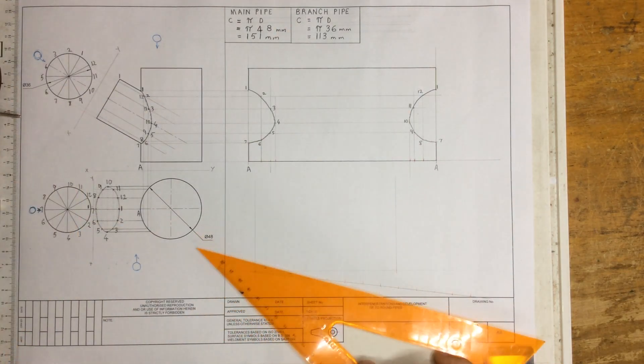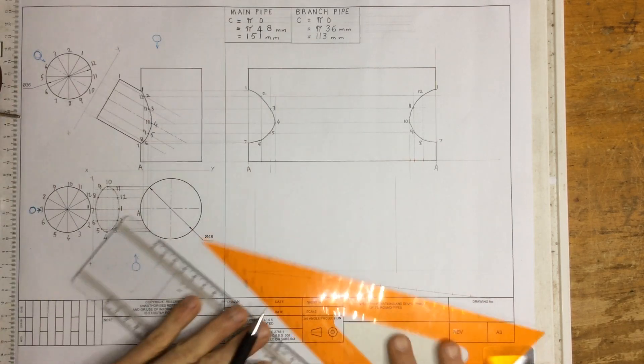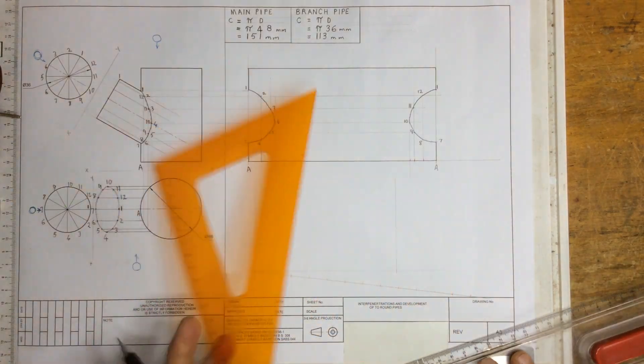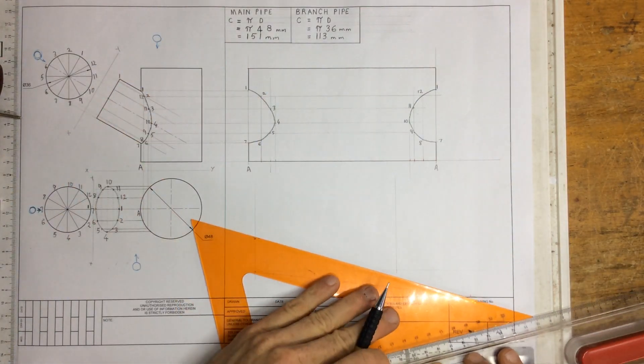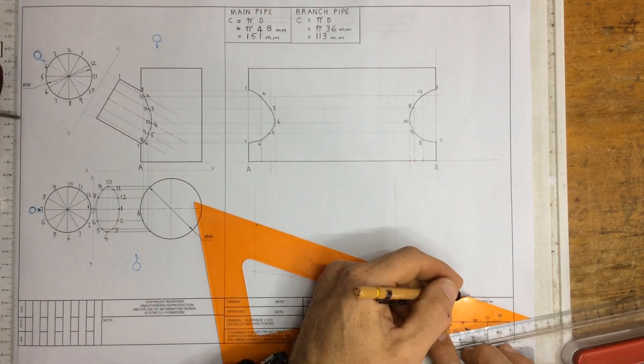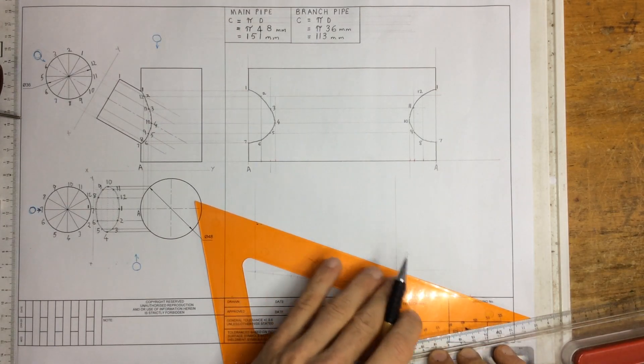Once I've got that, I can then take my ruler. I'm going to link that point over there to that last point, that 12th point over there. Let's draw a little line there.